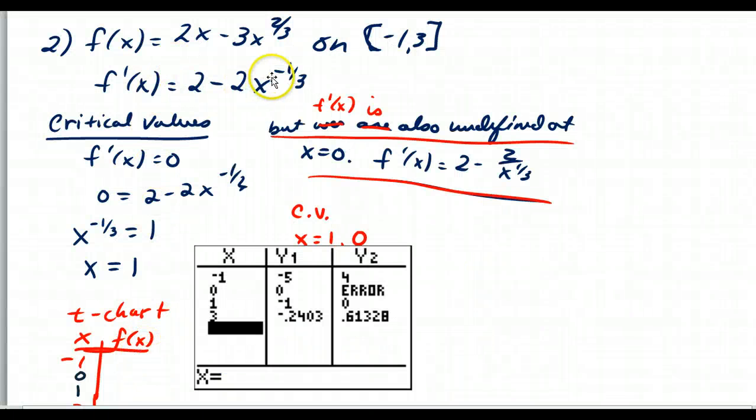Hopefully you've tried this one with f prime being this. Now when you find your critical values, you're going to say straight away, oh, I get 1 because I set the derivative equal to 0. Well, what you're neglecting though is that this is division by x to the 1 third. So that would be undefined then at x equal to 0.